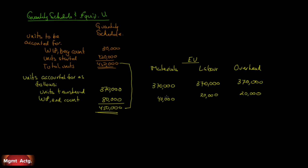The next thing we're told is that labor and overhead are 25% complete each. So we look at the 80,000: 25% of 80,000 is 20,000 done with respect to labor, and 20,000 equivalent units with respect to overhead. What we're doing is breaking down every unit in terms of its three big costs — sometimes we only have two, like material and conversion costs, but here we have three.